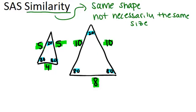Now it can be a lot of work sometimes to check all of that information, and actually it's sort of unnecessary to check all of that information. So there are three shortcuts for showing that two triangles are similar without having to look at all the angles and all the sides.